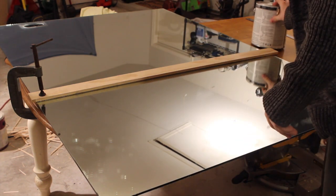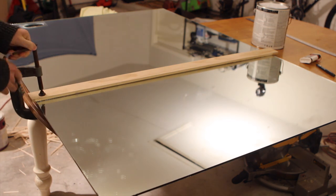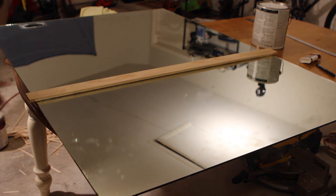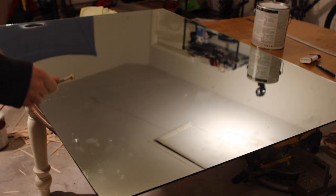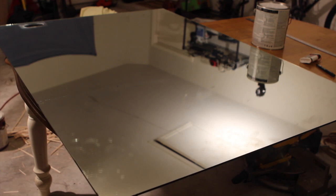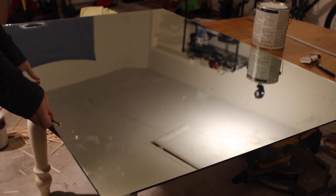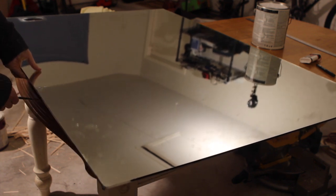Once you get it scored all the way, you can unclamp the board. You're going to use the little metal part on the back of the cutter, this part right here. You just lift up the mirror and tap on the back side of it.